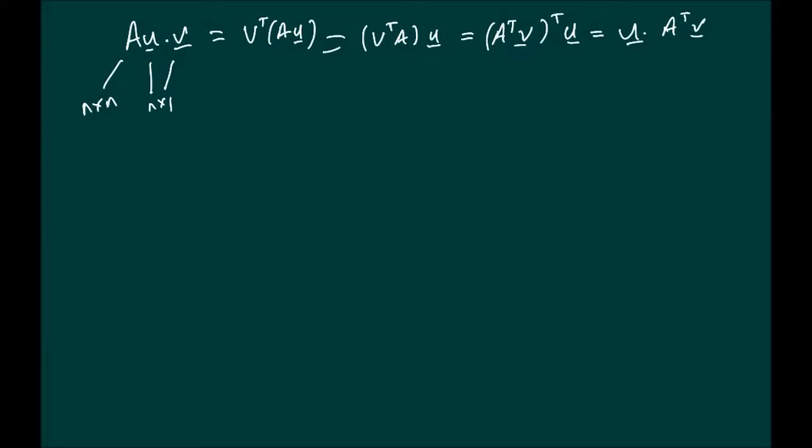A similar result can be gotten from U dot AV. So U dot AV, in fact, turns out that it's equal to A transpose U dot V. So when I say that, of course, I'm talking about these two being together, so here these two are together, remember.